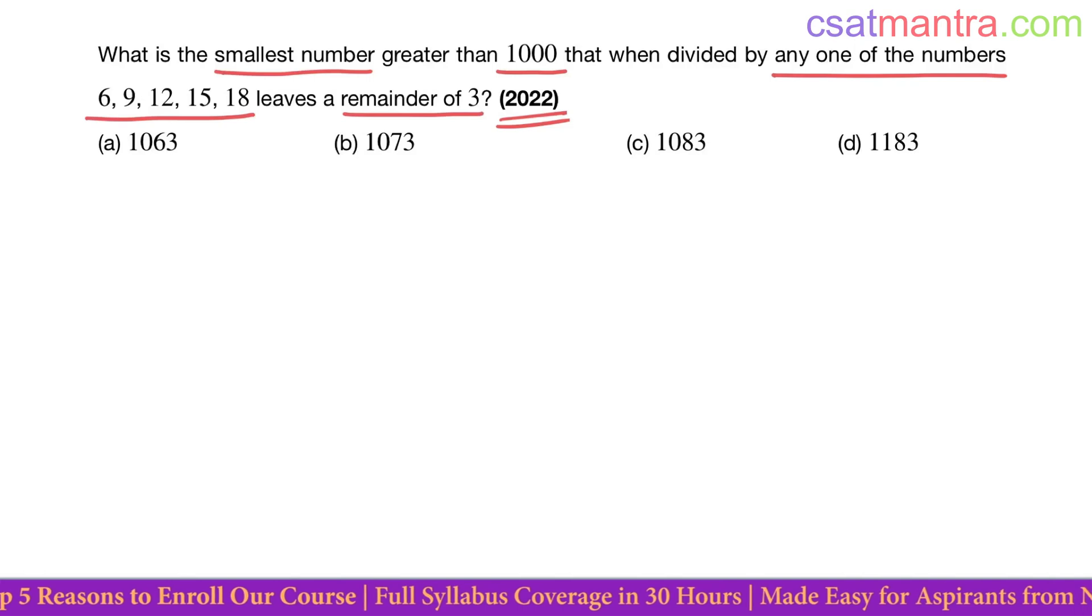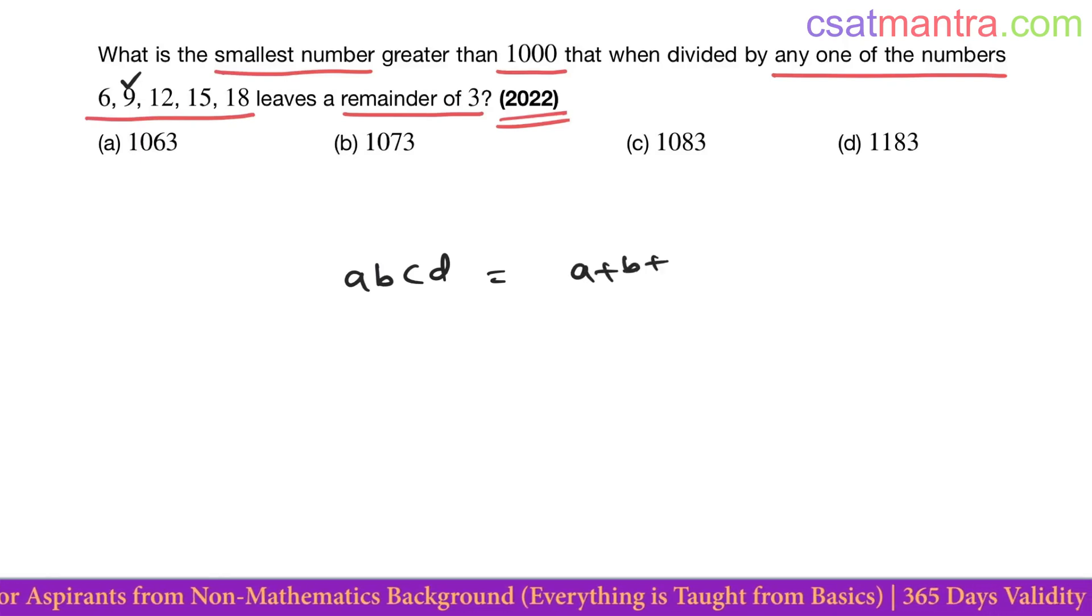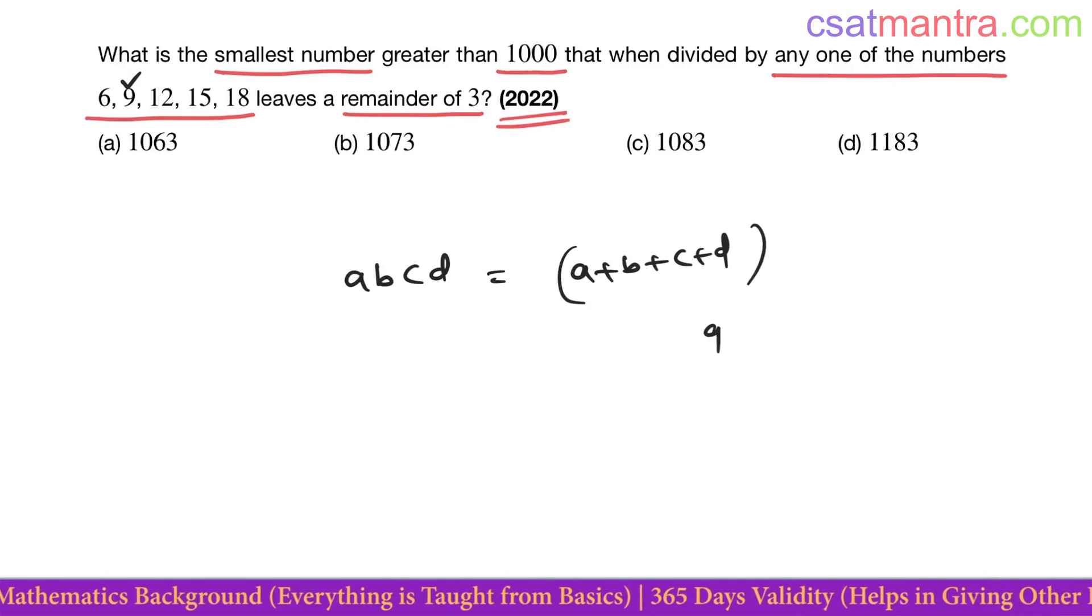Very easy problem. We'll solve this in two methods. What is the remainder when a number is divided by 9? Let's say abcd is divided by 9. To find the remainder, you add all the digits and divide the sum by 9. Whatever remainder you get,